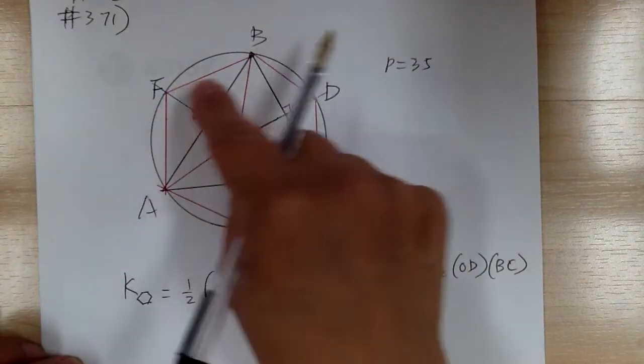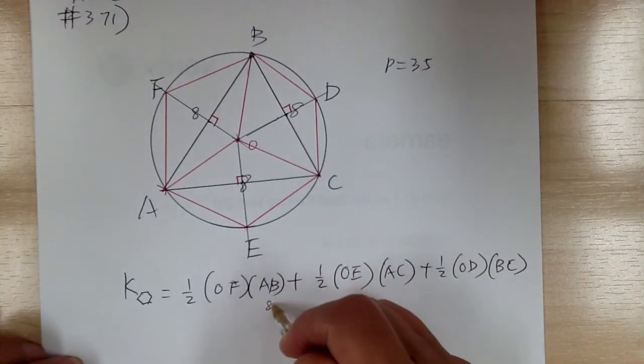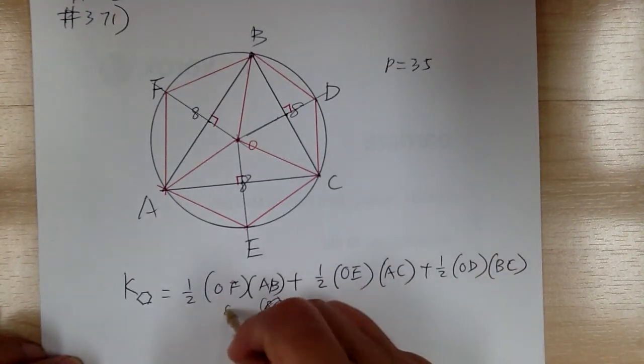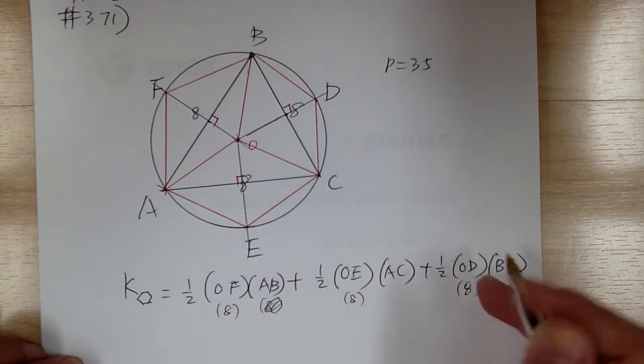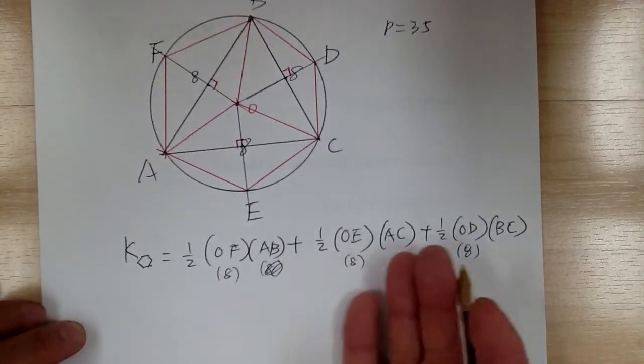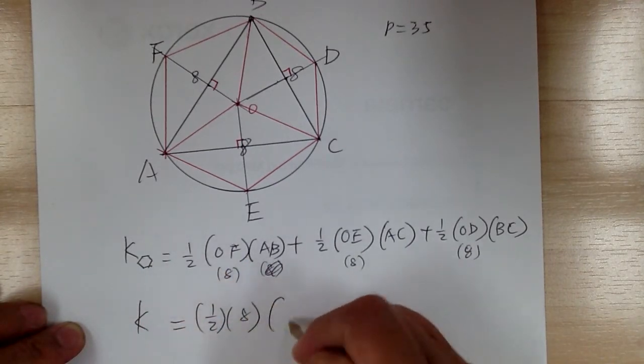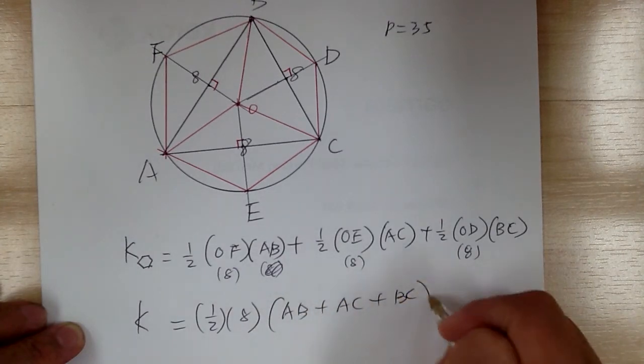So all of these equal eight. All these are your radius, so all these are equal. So you can go ahead and factor it out. So K would equal one-half times eight times AB plus AC plus BC.